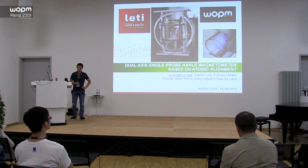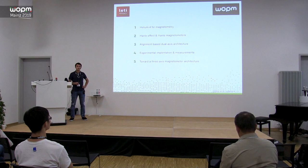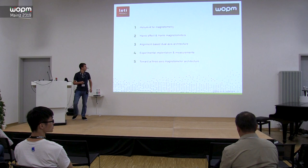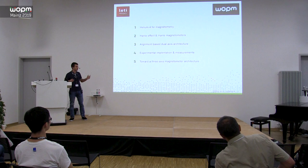A brief outline of the presentation. I will present helium-4 as a sensing medium for magnetometry. Then we will see the Hanle effect, the way we designed this architecture, the experimental implementation we did, and finally how to maybe go toward a three-axis magnetometer architecture by upgrading the dual-axis architecture.